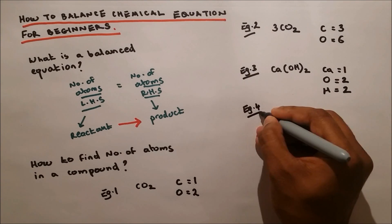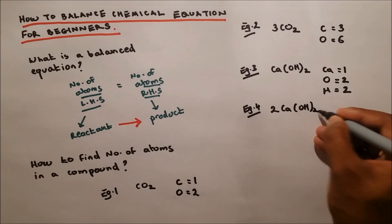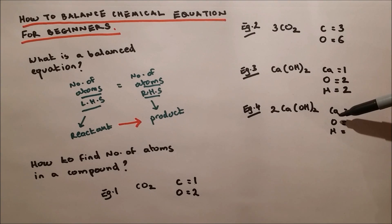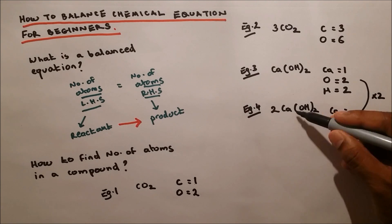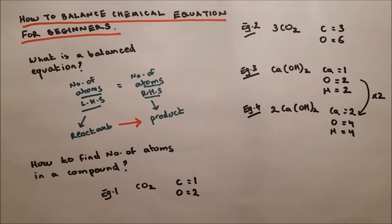This is my last example, and I want you to do this. Before, when it was one molecule, we had one calcium. But this is two moles of calcium hydroxide, 2Ca(OH)2. So you multiply by two. That means you have two calcium. Oxygen was two, so now it's four. Hydrogen was two, now it's four. It's very easy.